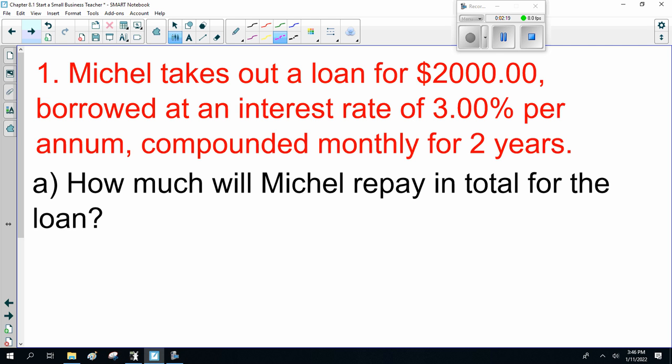Michel takes out a loan for $2,000, borrowed at an interest rate of 3% per annum, compounded monthly for two years. How much money will Michel repay in total for the loan? Now, per annum, that's the fancy way of saying per year. The amount he pays back equals the principal (1 plus R over N) to the power of NT. The principal is how much he borrows, $2,000.